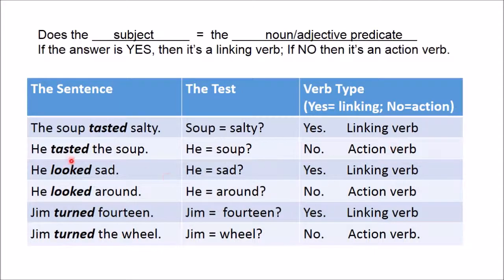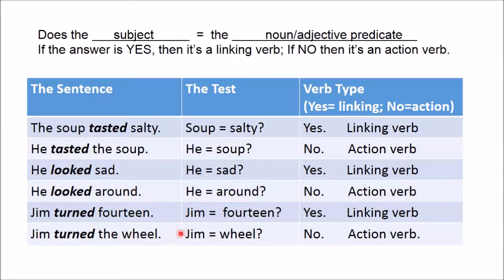'He looks sad' — does he equal sad? Yes, so it's a linking verb. 'He looked around' — does he equal around? No, so 'looked' is an action verb. 'Jim turned 14' — does Jim equal 14? Yes, he is 14, so it's a linking verb. 'Jim turned the wheel' — does Jim equal wheel? No, so 'turned' is an action verb.